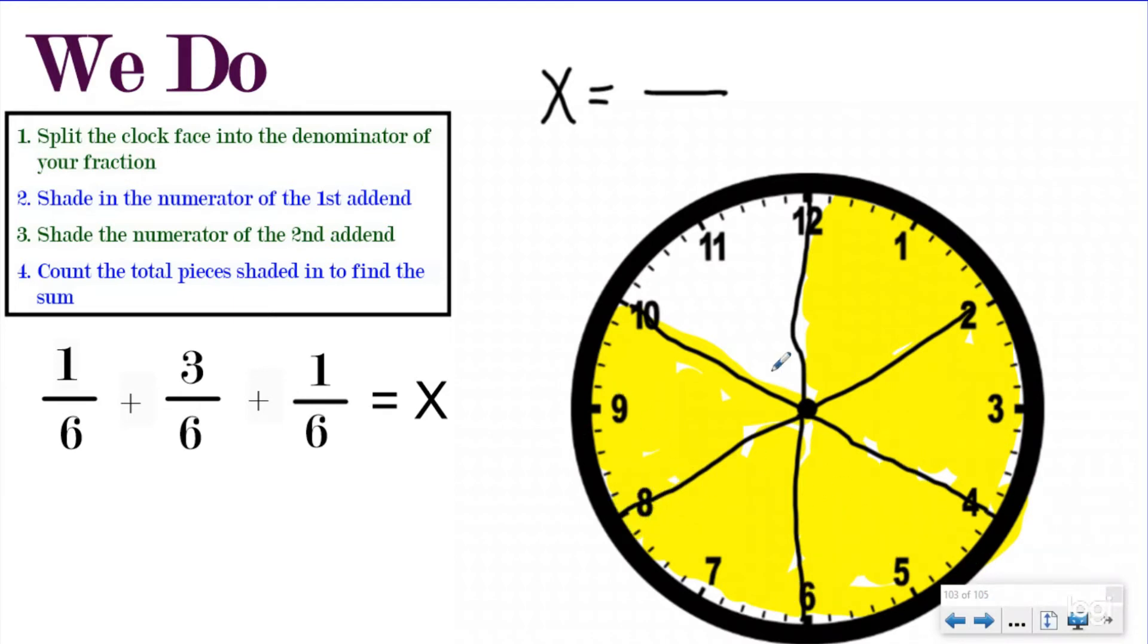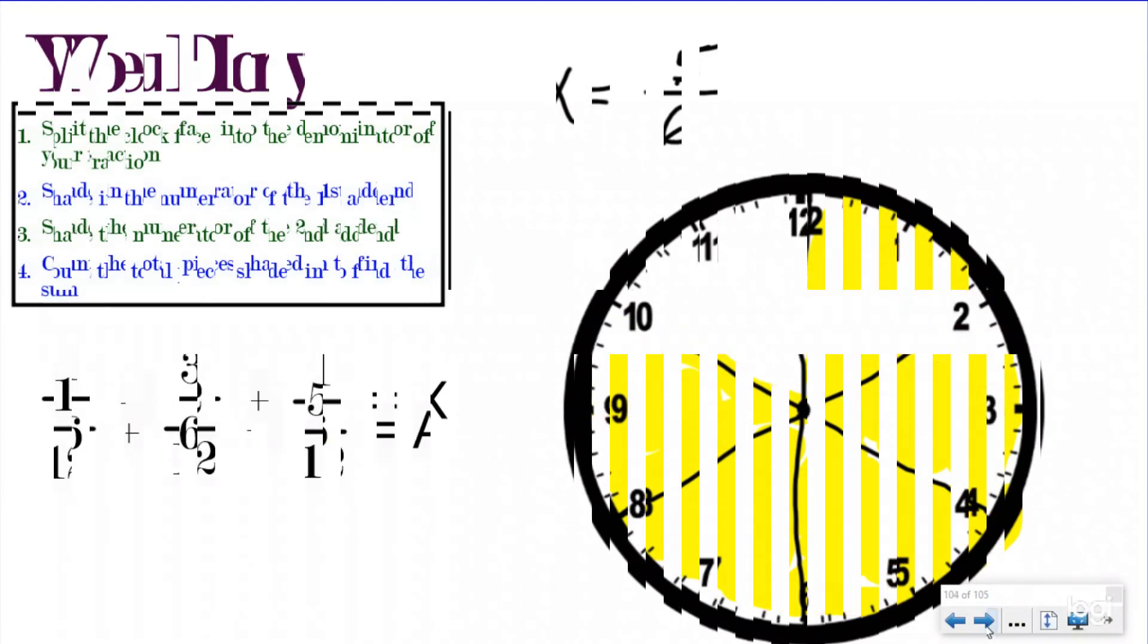When I shade that in, you see that the numerator now is five, and your denominator still didn't change. It's still six. There's still six total pieces, and your numerator is still five. Again, when you add fractions, the denominator does not change. That just tells you how many total pieces there are that the whole split into. The numerator is the one that's telling you how many pieces you're talking about. That's the number that changes. So one plus three plus one was five, and my denominator stayed a six.